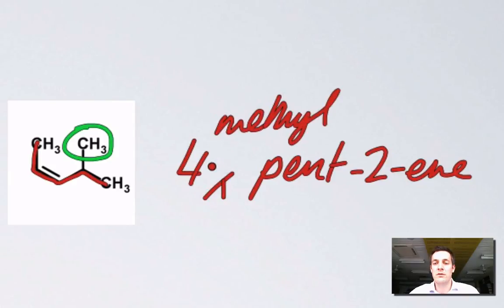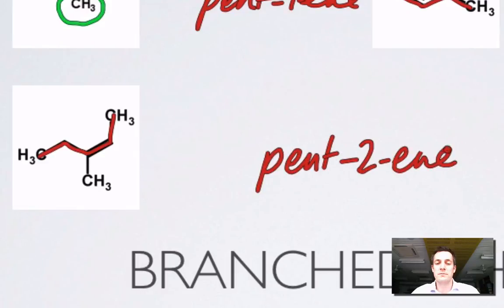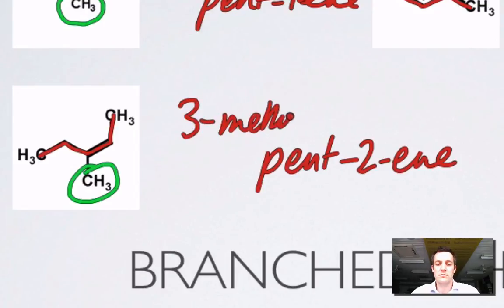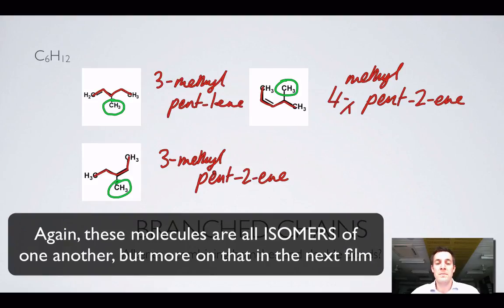You might wonder why we don't number from the other end and call the double bond starting at three — but we name the alkene first, then state where the branches are. In the final example, the longest chain is again five carbons, the double bond starts at carbon two, and the methyl group is attached to the third carbon — giving 3-methylpent-2-ene.